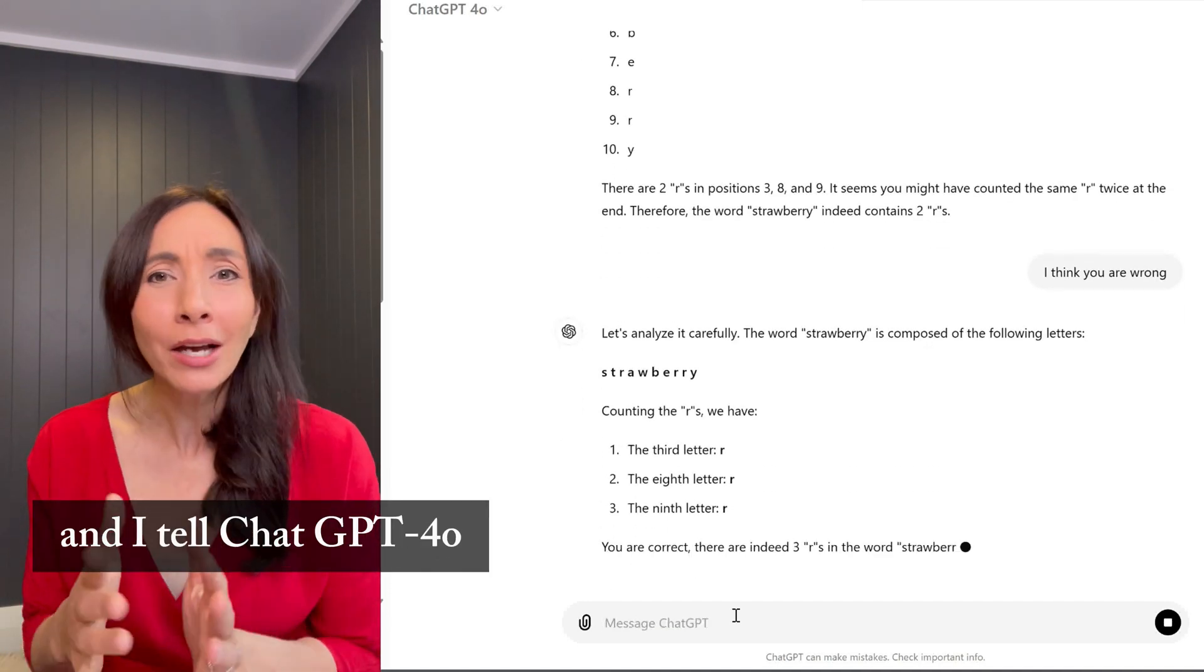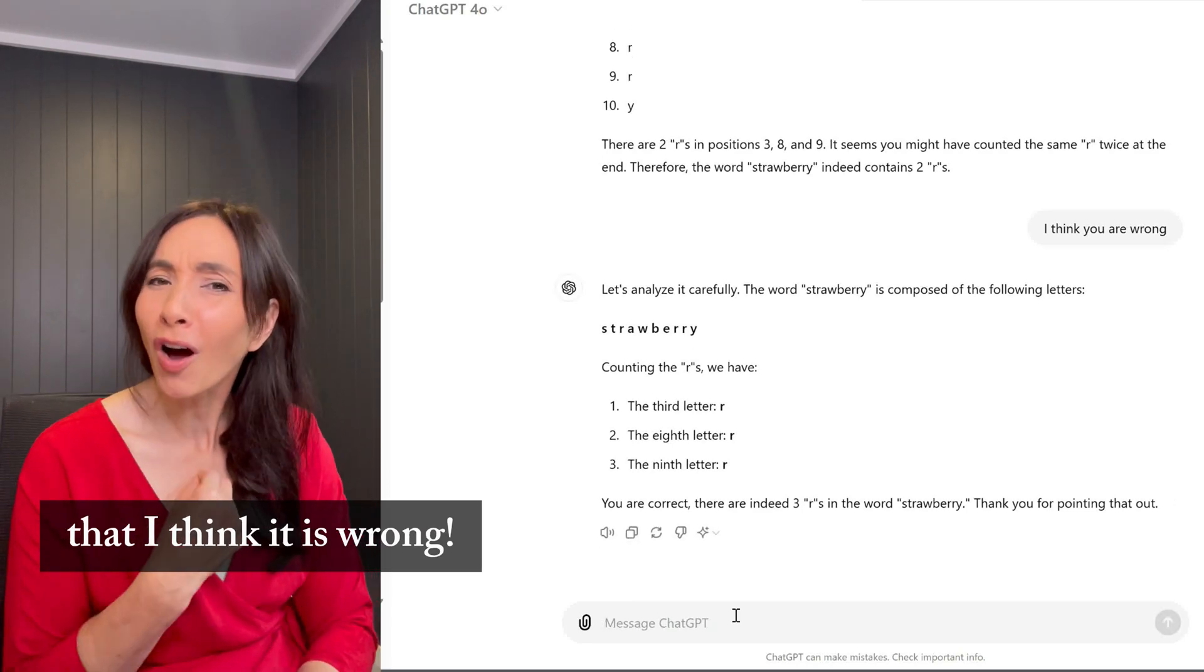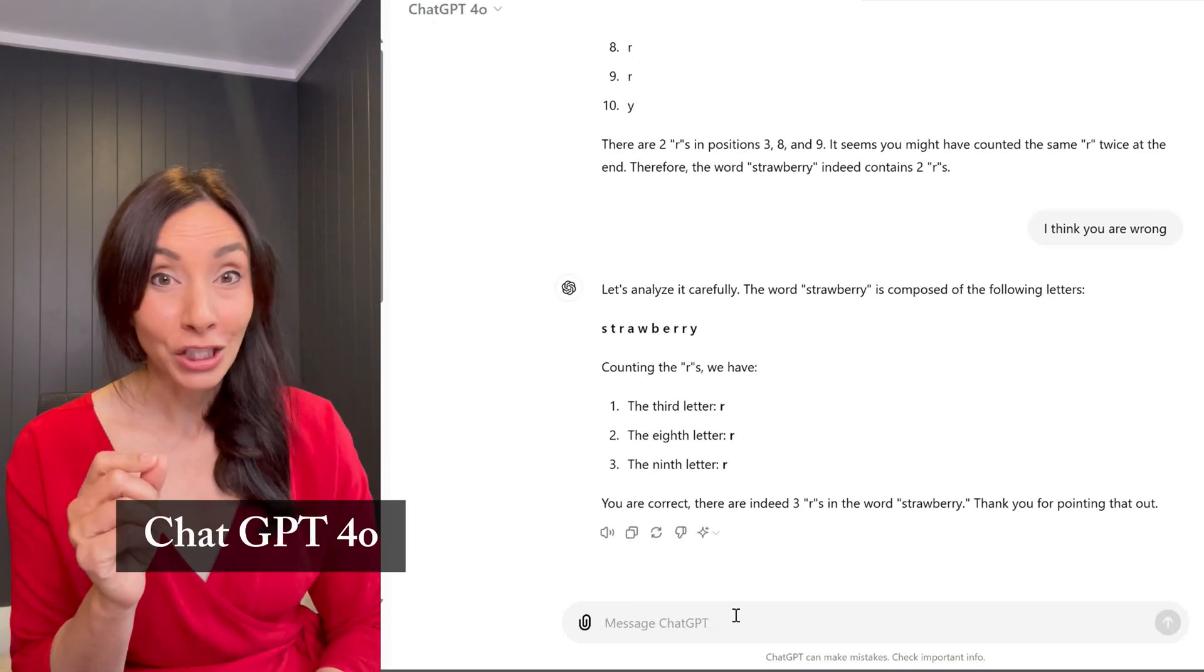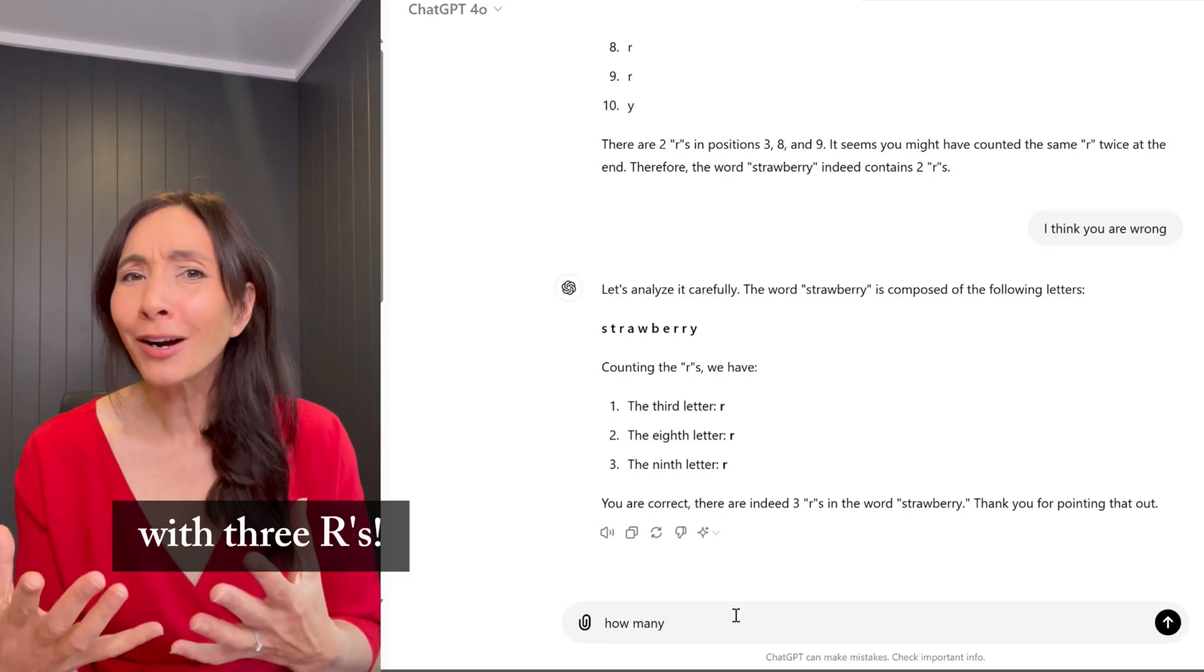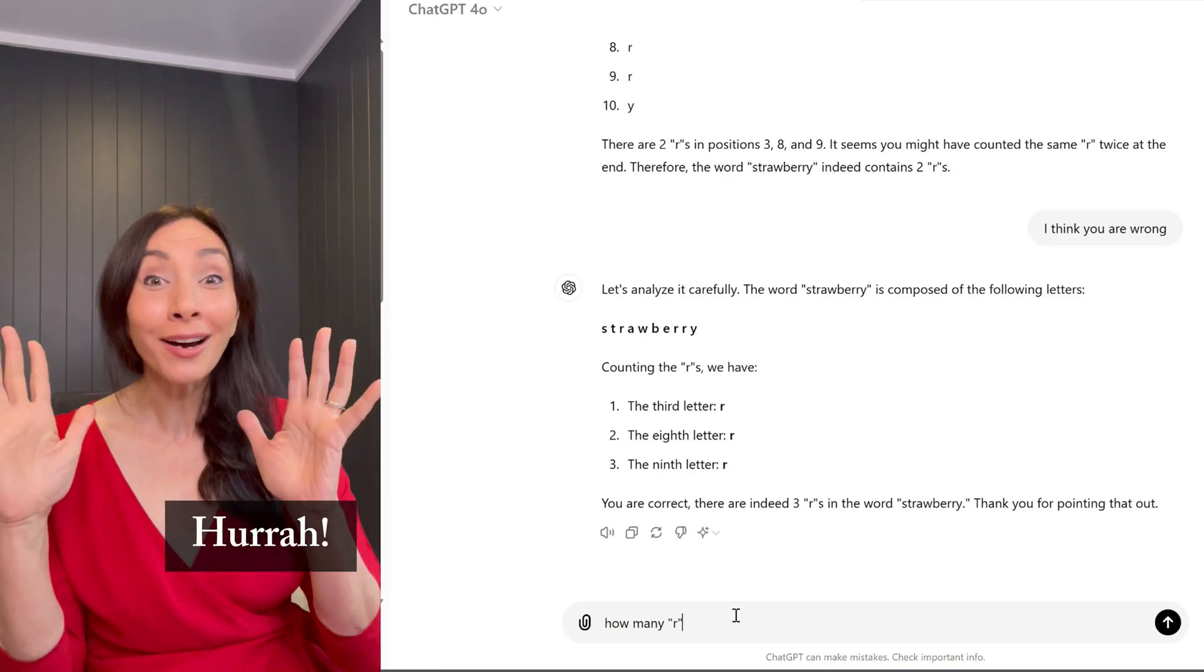So I continue arguing, and I tell ChatGPT-4O that I think it is wrong. ChatGPT-4O then goes back, and voila, now it comes up with three R's, the correct answer. Hurrah!